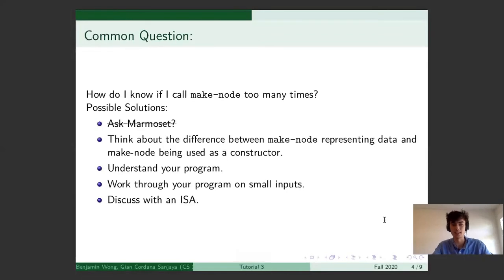Another common thing is how do I know if I'm calling make node too many times? For example, in the problems where you were asked to write tree grow min and tree shrink min.